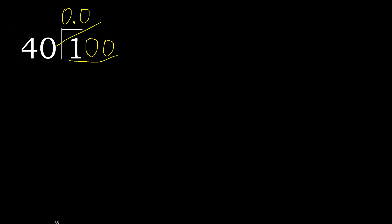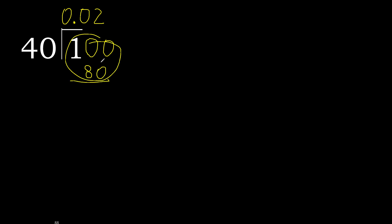100 is not less, therefore work with 100. 40 multiplied by which number is nearest to 100 but not greater? 40 multiplied by 3 is 120 — that is greater. Multiplied by 2 is 80 — that is not greater. Ok. 100 minus 80 is 20. Next.